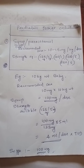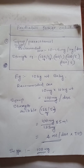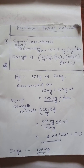Today's topic is pediatric dosage calculation. The first drug is paracetamol, which is available in the form of syrup, tablet, injection, and suppositories. The recommended dosage of paracetamol is 10 to 15 milligram per kilogram per dose. The available strengths in the market are 125mg/5ml, 100mg/1ml, 120mg/5ml, and 250mg/5ml.